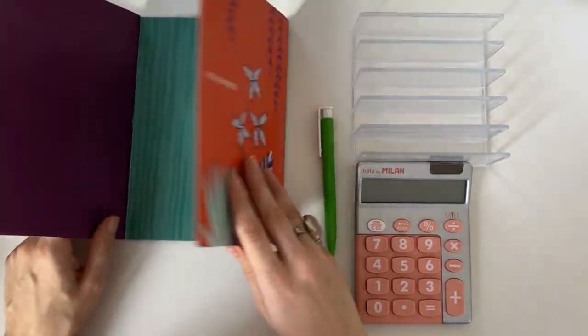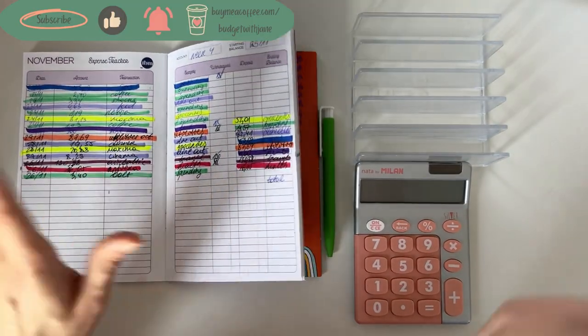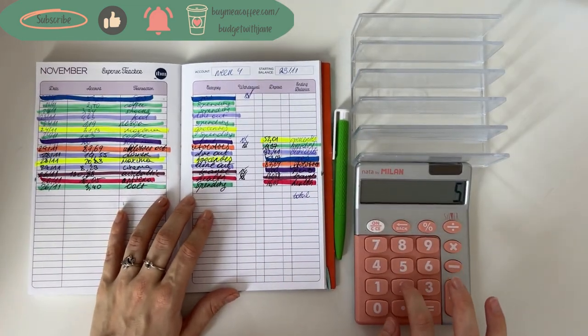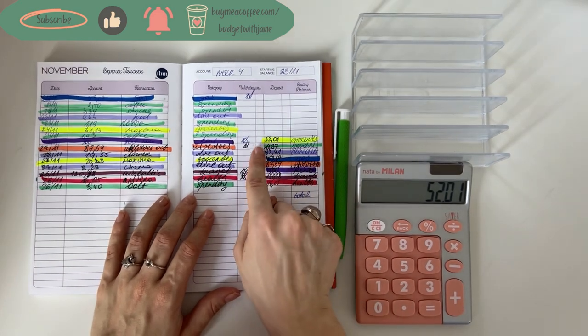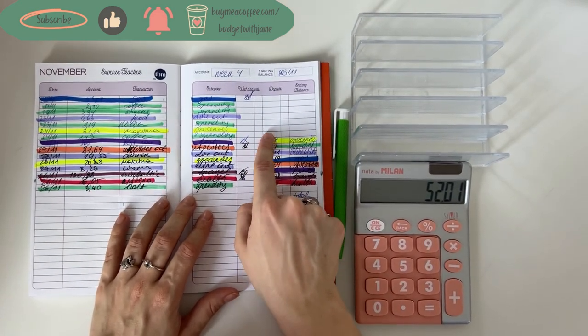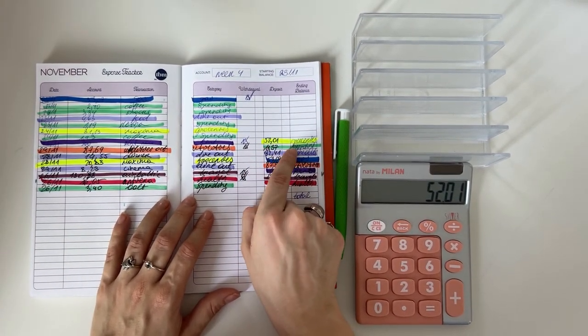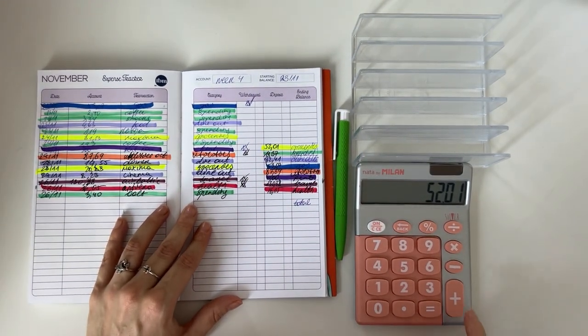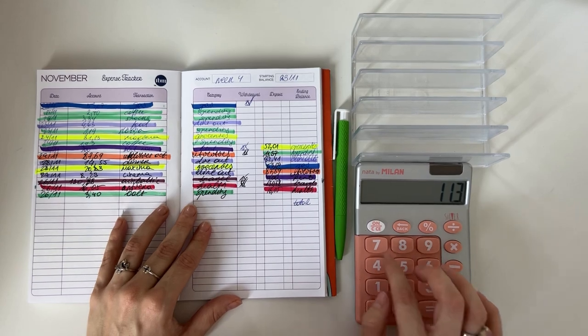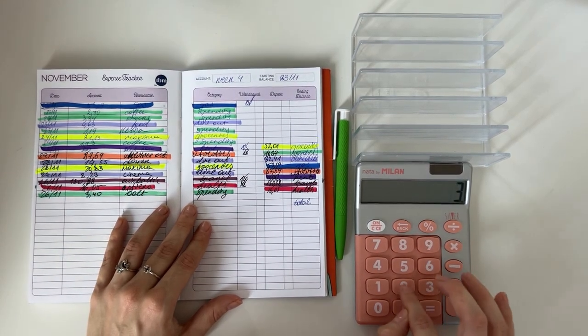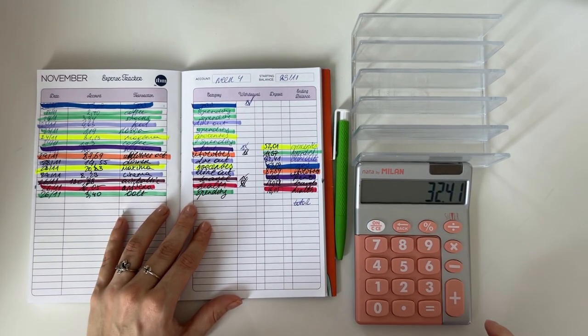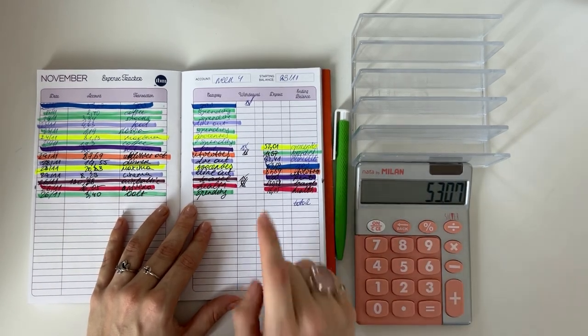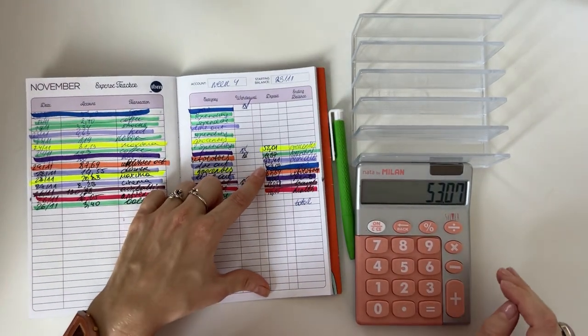Let's start with the expenses. For groceries we had 52.01, our weekly goal is 50, so it's a little over but I'm gonna just take it out from one of the other cash envelope categories. Spending was 11.37 plus 32.41 from dine out.